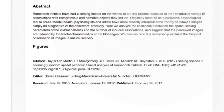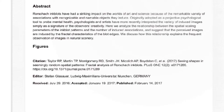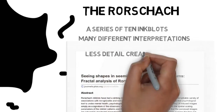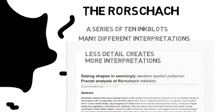This makes sense intuitively. A circle can represent a face, a sign, a wheel, or a head. The more detailed an object, the more certain we are of what it is. There aren't many people seeing different things within the Mona Lisa, for example.